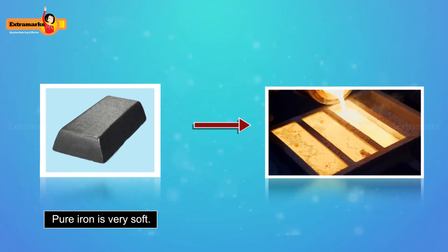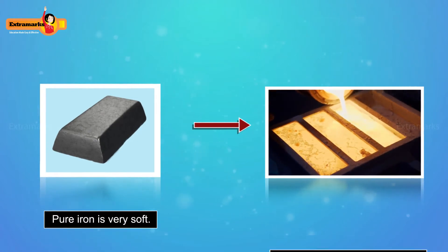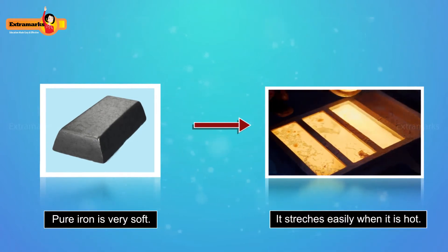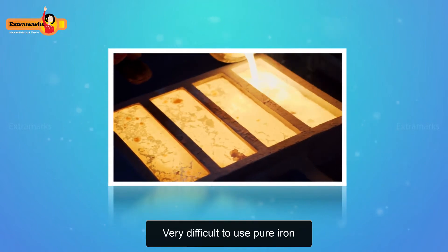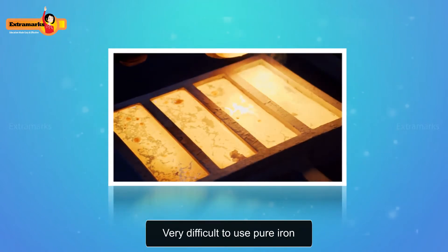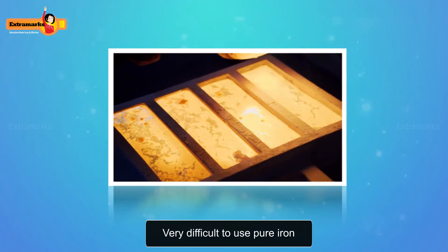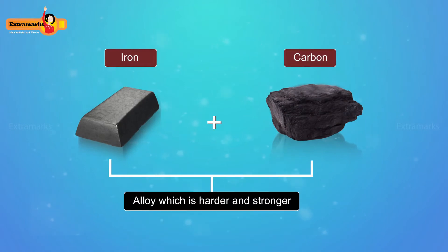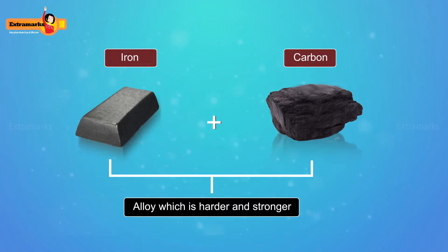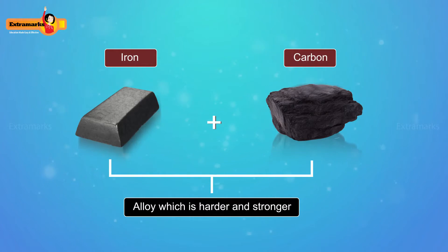For example, pure iron is very soft and it stretches easily when hot, making it very difficult to use in its pure form. Due to this reason, an alloy of iron is used by mixing a small amount of carbon, which makes it harder and stronger than pure iron.